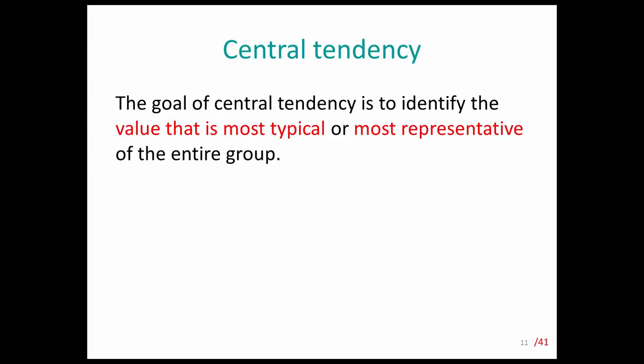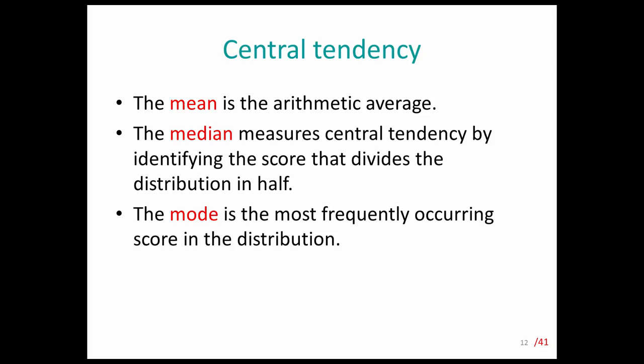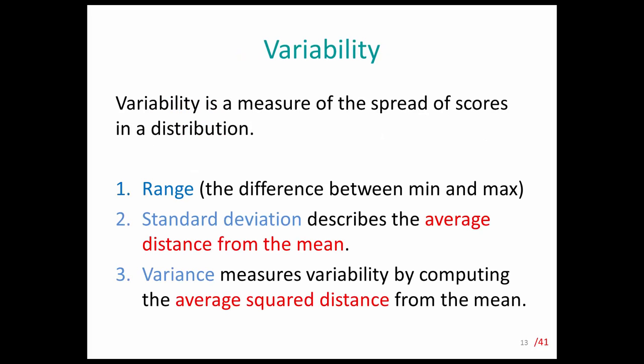Another very popular descriptive statistic is central tendency. Central tendency simply means the average, or the most typical or most representative value in the entire sample. The mean, the median, and the mode are three examples of central tendency. The mean is the average, the median is the score that divides the distribution in half, and the mode is the most frequent score in the distribution.